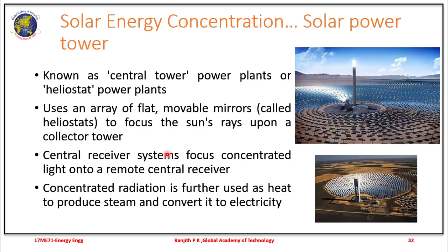The solar power tower is often known as a central tower or heliostat power plant. Here there is use of flat movable mirrors called heliostats that focus the sun's rays upon the solar collector tower at the top. The central receiver system focuses this concentrated light onto a receiver, and this concentration is used to heat up working fluid, produce steam, and convert it to electricity.